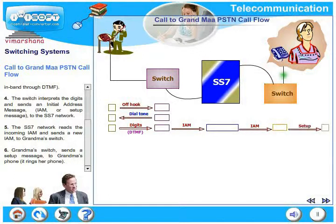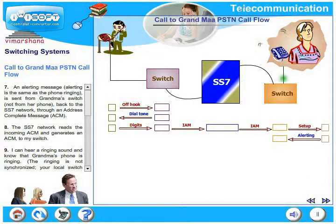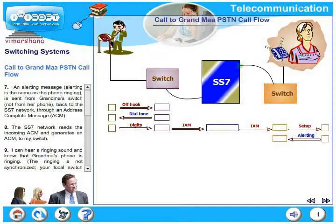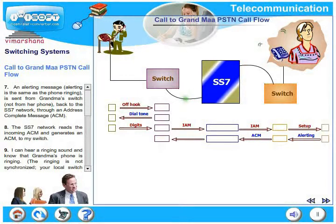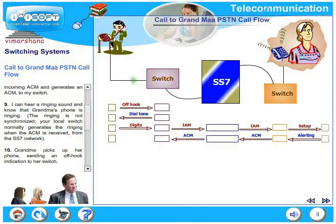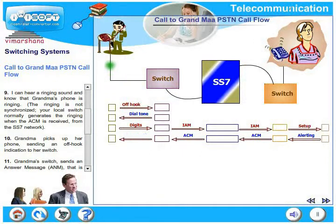Grandma's switch sends a setup message to grandma's phone and rings her phone. An alerting message is sent from grandma's switch back to the SS7 network through an Address Complete Message (ACM). The SS7 network reads the incoming ACM and generates an ACM to my switch. I can then hear a ringing sound and know that grandma's phone is ringing. Please note that the ringing is not synchronized.